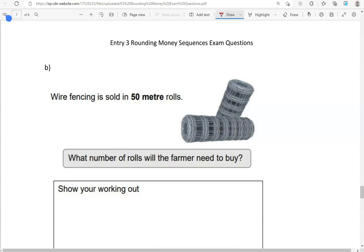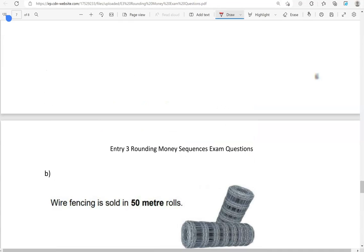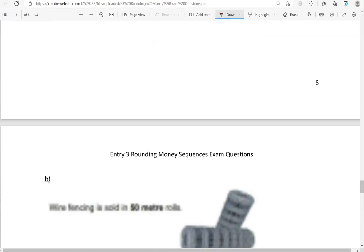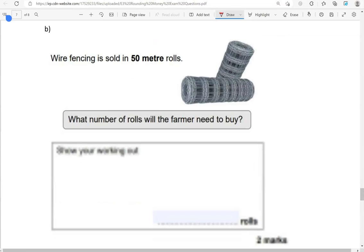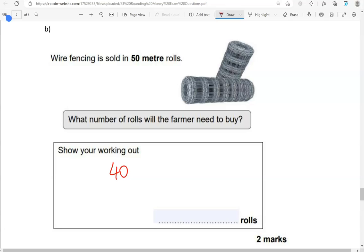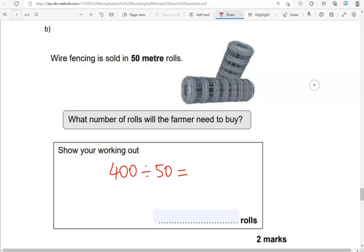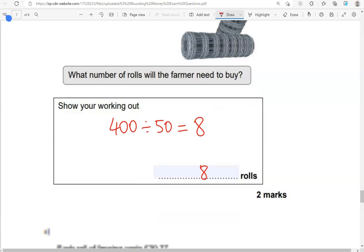Gives us 400 metres. Wire fencing is sold in 50 metre rolls. What number of rolls will the farmer need to buy? So, overall, he needs 400 metres. So, if we put 400 divided by 50, it will give us the number of rolls. That's 8. So, 8 rolls are needed.